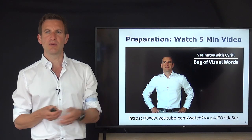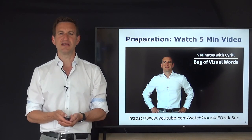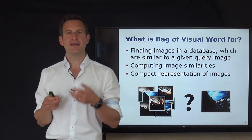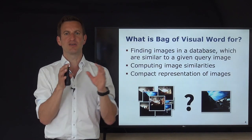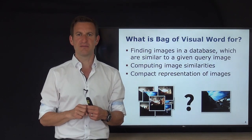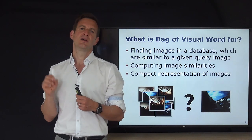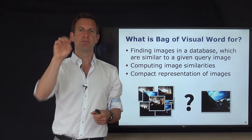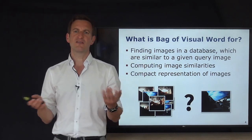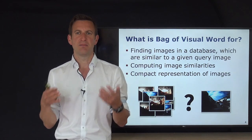As a preparation for this lecture, you may want to watch a five-minute summary explaining bag of visual words briefly. So what is bag of visual words? It's a technique that can be used for finding similar images in a database, either images among each other or with respect to a given query image. You put a large set of images into a database and want to find an image similar to one query image — similar to what Google image search does, where you can drag and drop an image and it returns similar images.